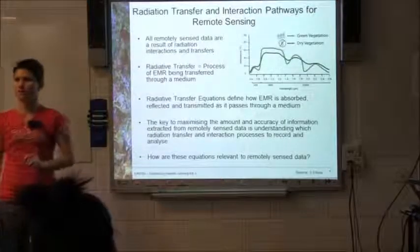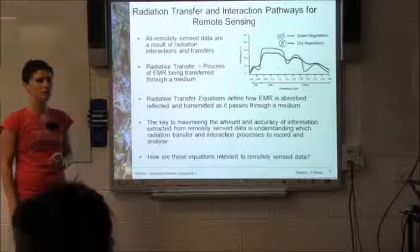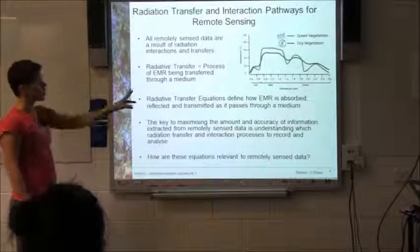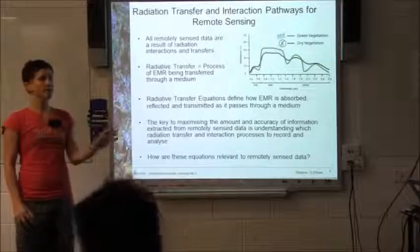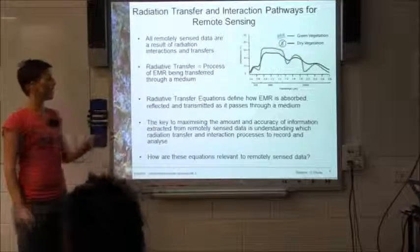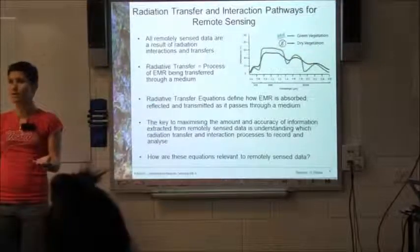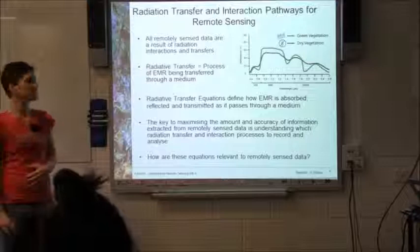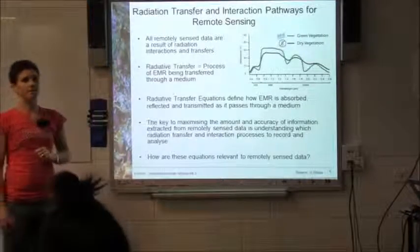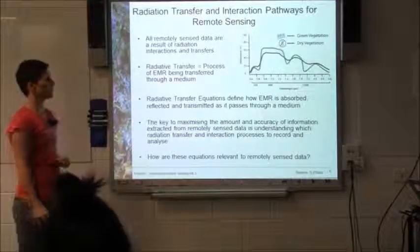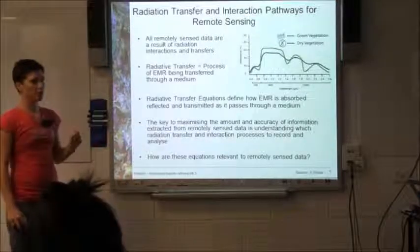On the right-hand side, we've got a spectral signature graph. From your pre-class materials, you should know that on the bottom, or the x-axis, we use our wavelength — in this example it's in micrometers, but it might also be in nanometers. And on the y-axis is our reflectance level.